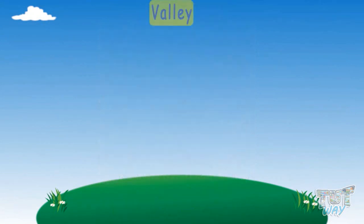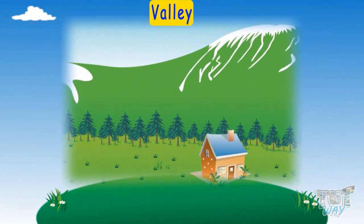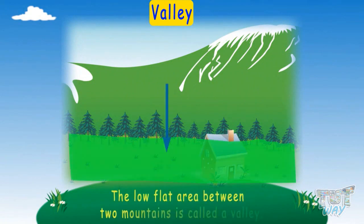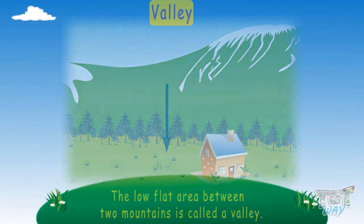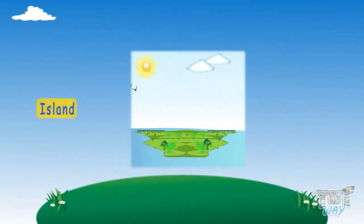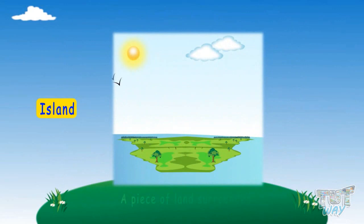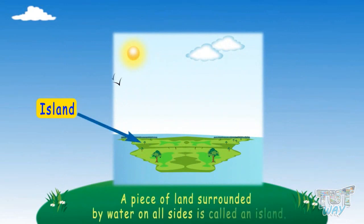Valley: The low flat area between two mountains is called a valley. Island: A piece of land surrounded by water on all of its sides is called an island.